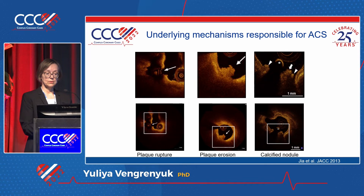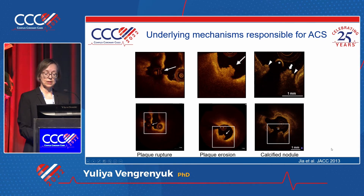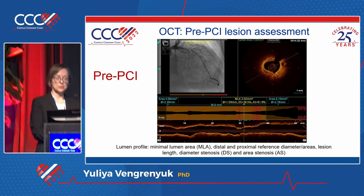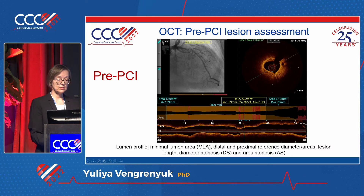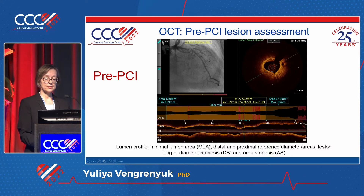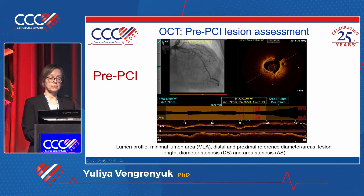OCT can also differentiate between different mechanisms responsible for acute coronary syndrome — plaque erosion, plaque rupture, and calcified nodule — and as Dr. Sharma mentioned, treatment may be very different depending on the mechanism. Before PCI, OCT provides all the same measurements as IVUS — luminal diameter, references — with co-registration with angiography, and all measurements are generated automatically the moment the pullback is done.